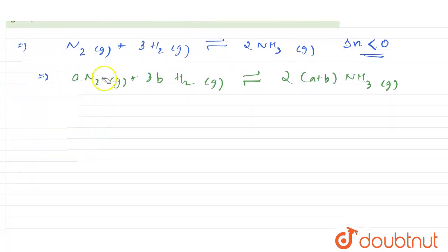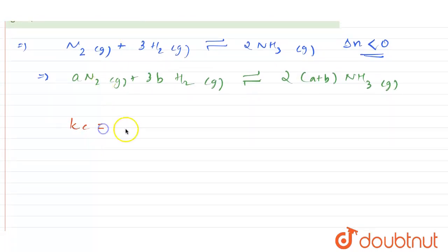Now we can find the value of Kc. So Kc will be equal to the concentration of the product raised to the stoichiometric coefficient. So NH3, it is going to be 2(A+B), divided by the concentration of the reactant raised to the stoichiometric coefficient.